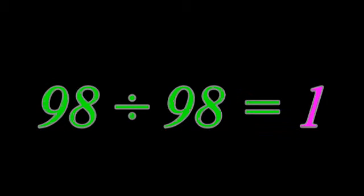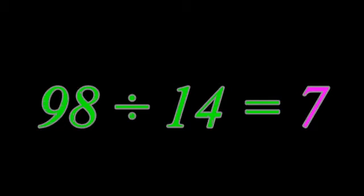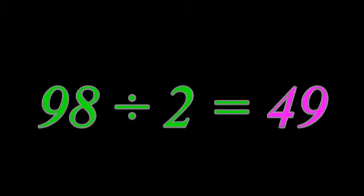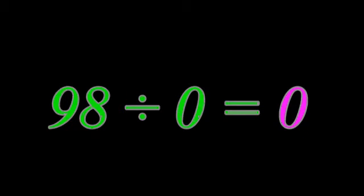98 divided by 98 equals 1. 98 divided by 49 equals 2. 98 divided by 14 equals 7. 98 divided by 7 equals 14. 98 divided by 2 equals 49. 98 divided by 1 equals 98. 98 divided by 0 equals 0.